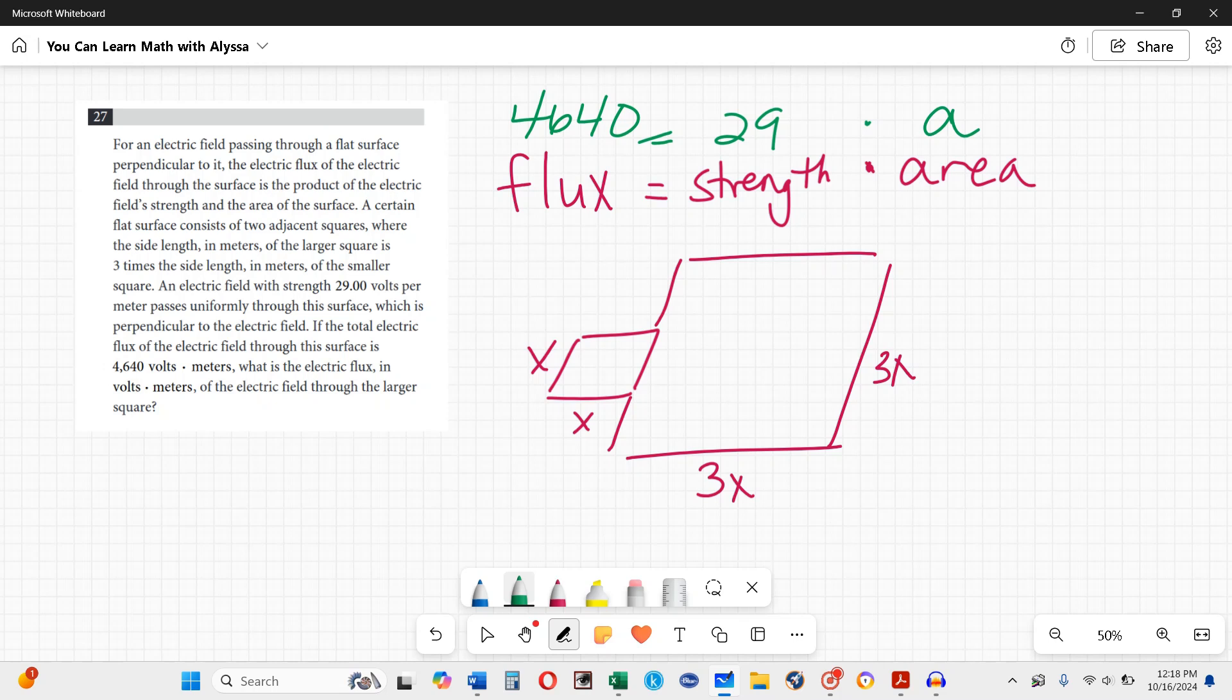First, we're told the flux and the strength but we don't know the area of this whole combined thing. I'm going to solve for the area. 4640 equals 29 times the area. To undo what's been done, I need to divide both sides by 29. When I divide 4640 by 29, I get 160.